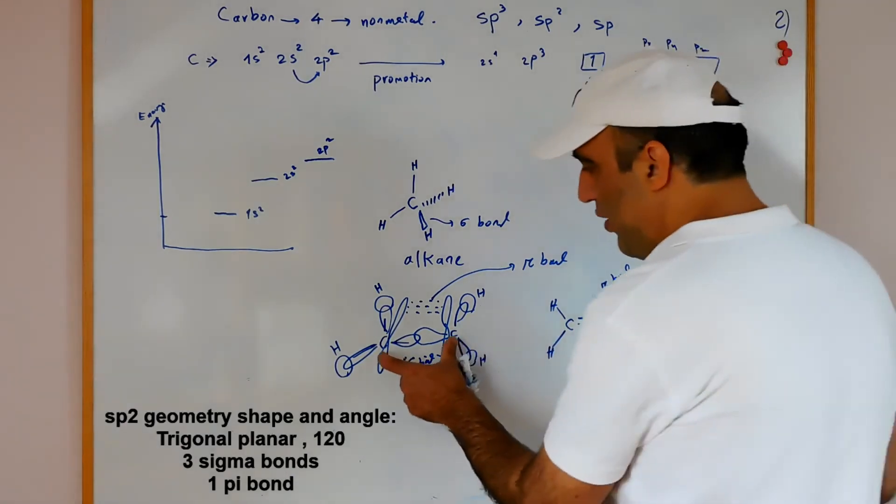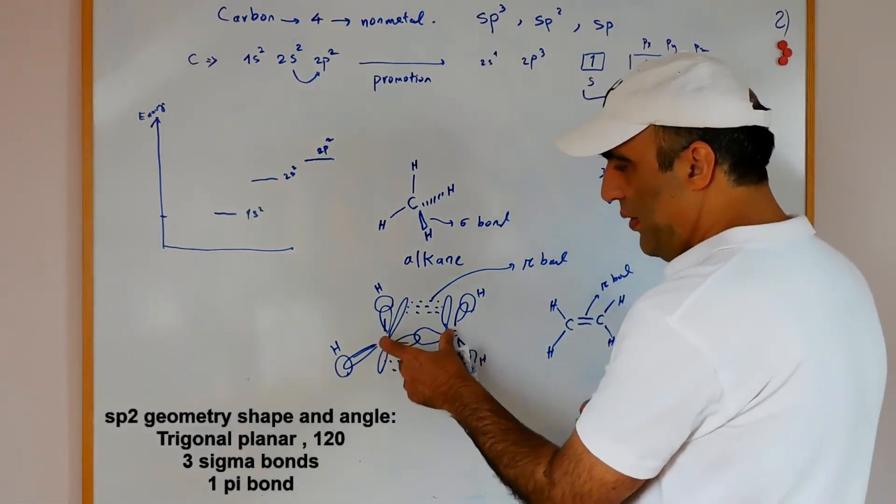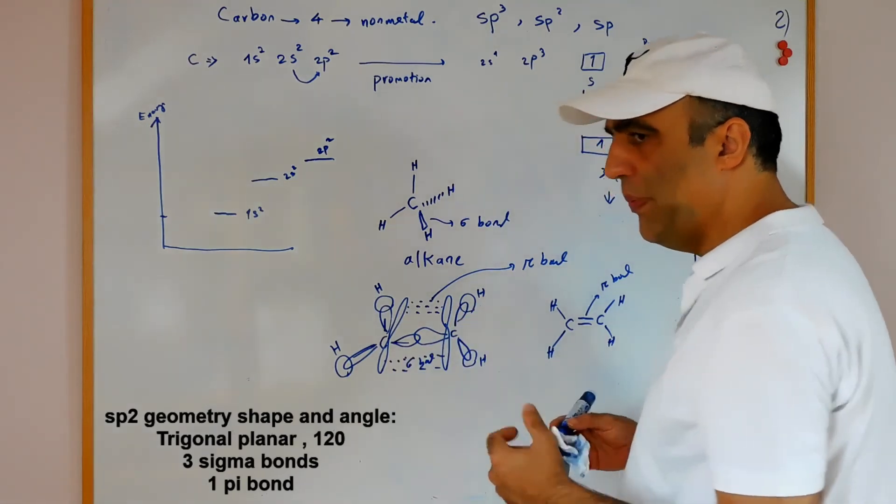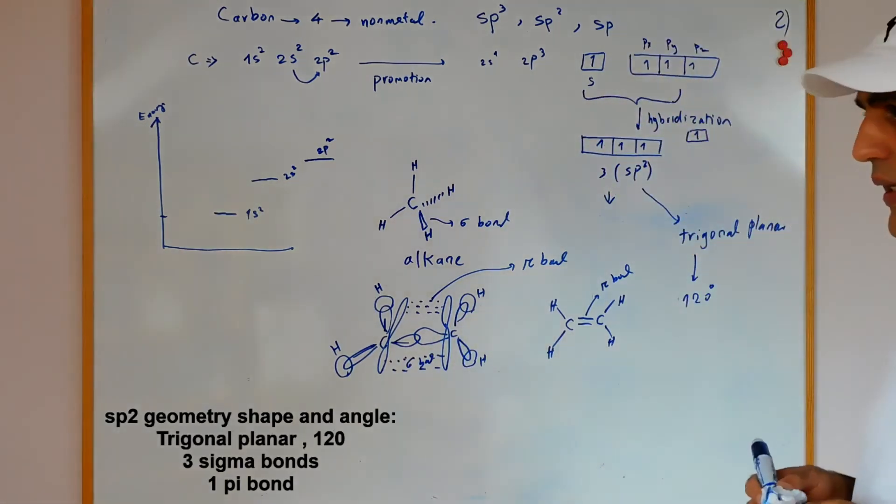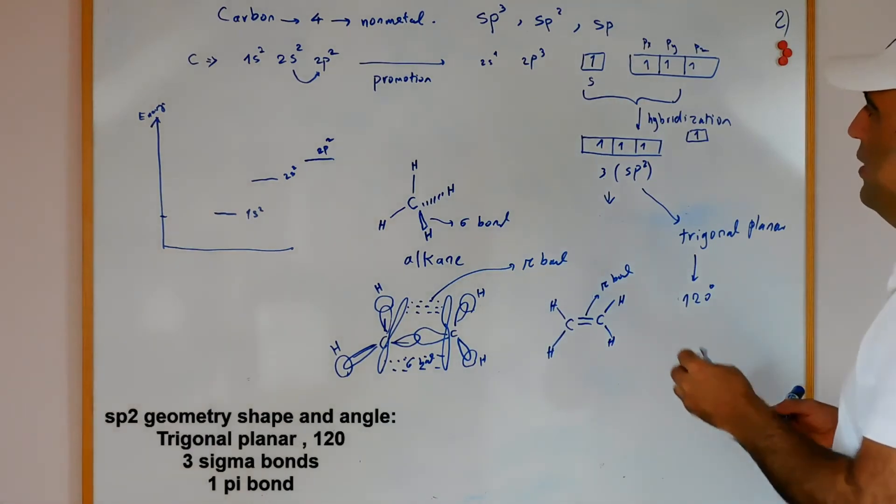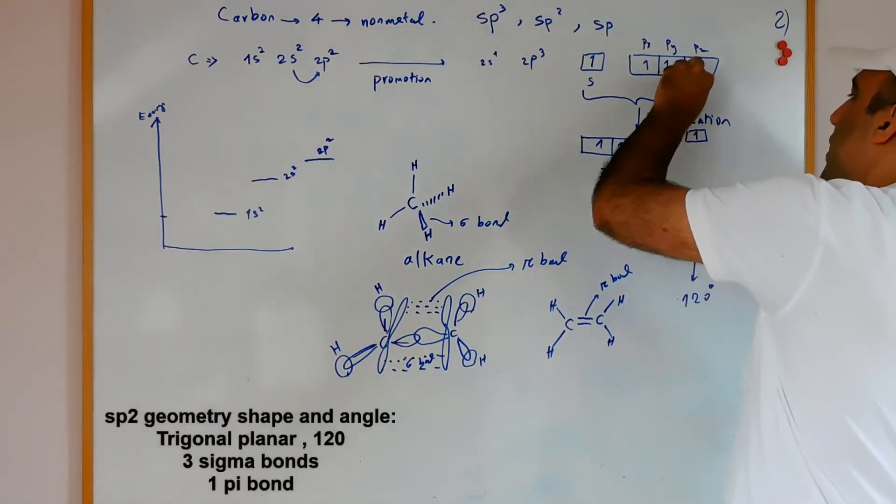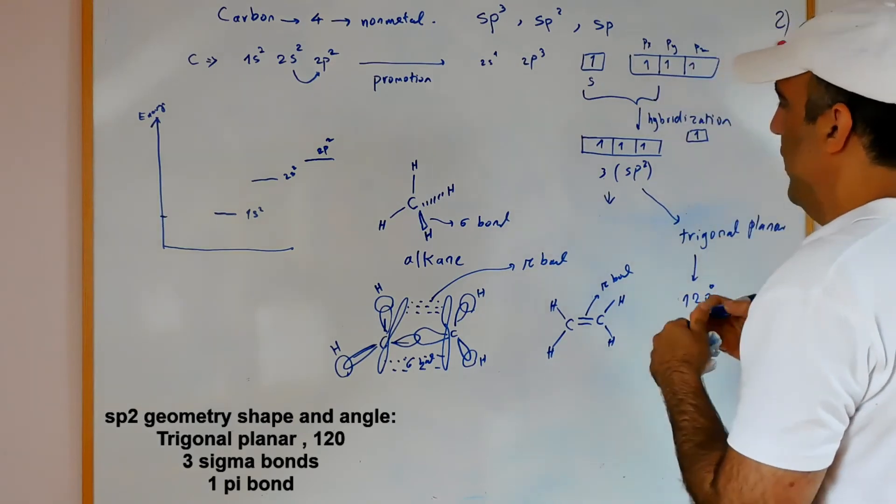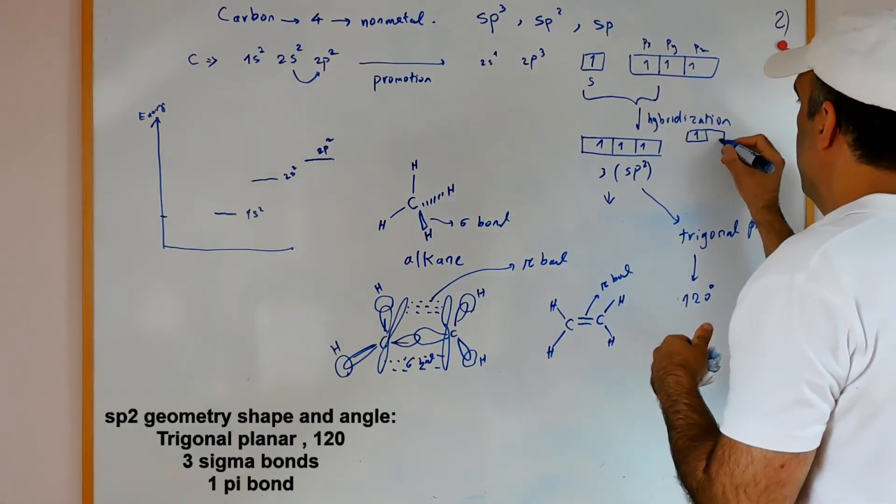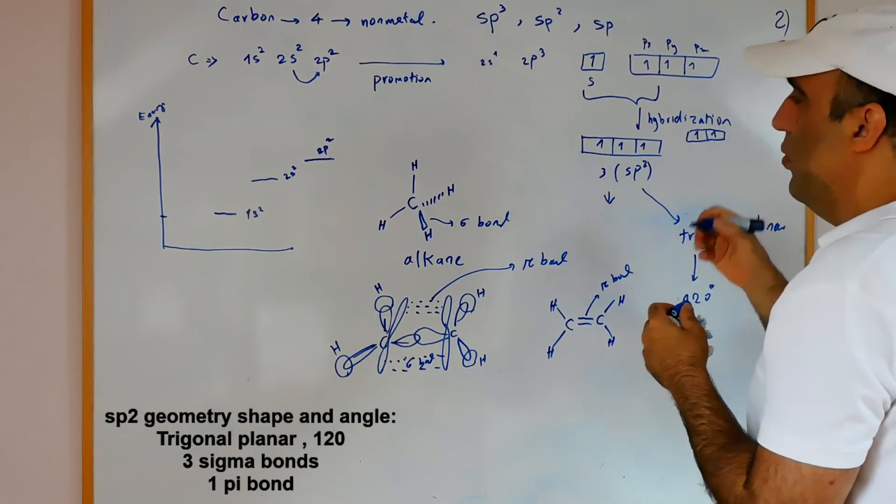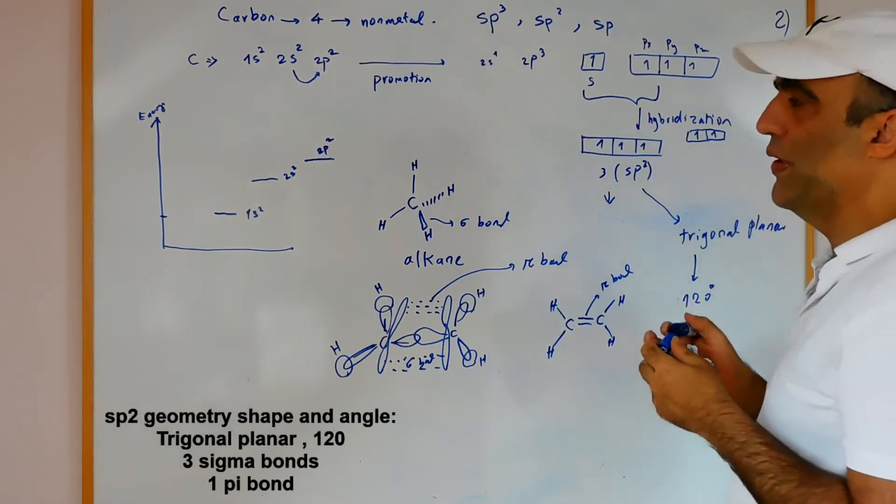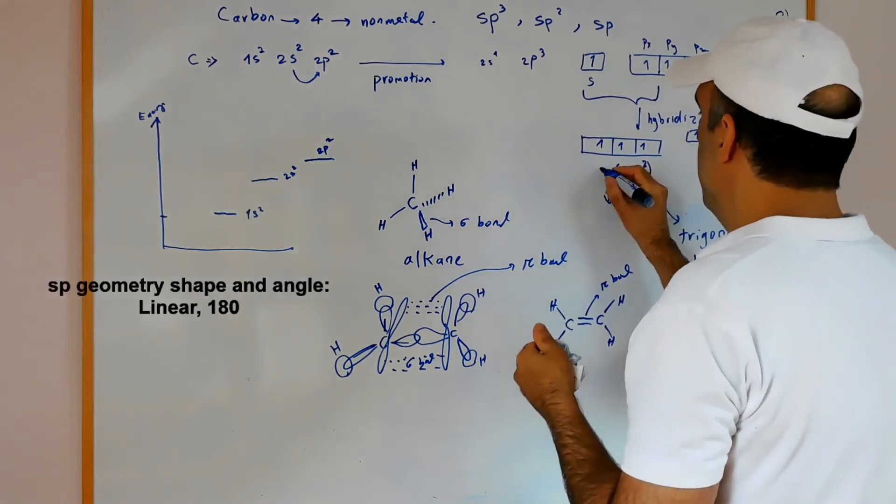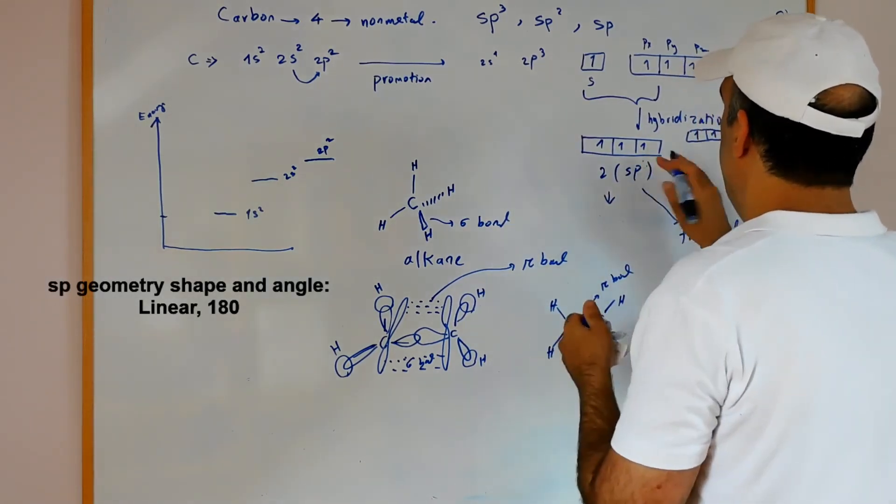The bond length between sp2 to sp2 with the pi bond and sigma bond will be shorter compared to sp3. If we hybridize one s with one p, in this situation two orbitals remain and we will have sp hybridization.